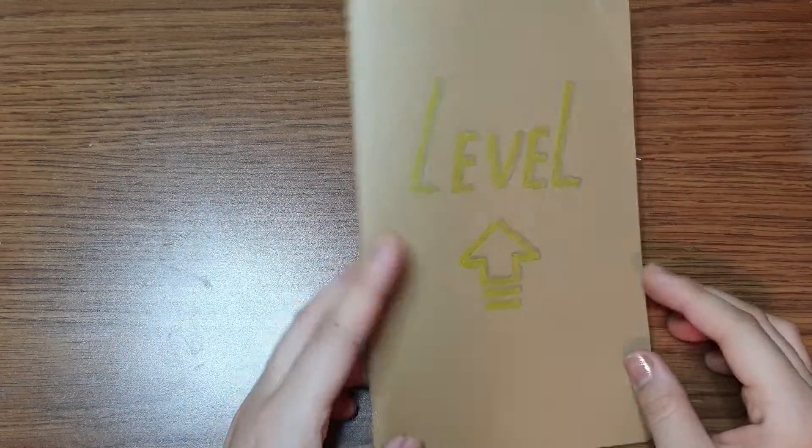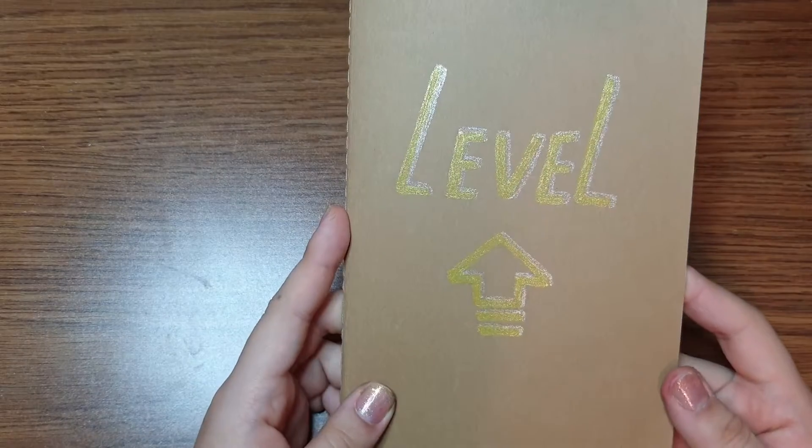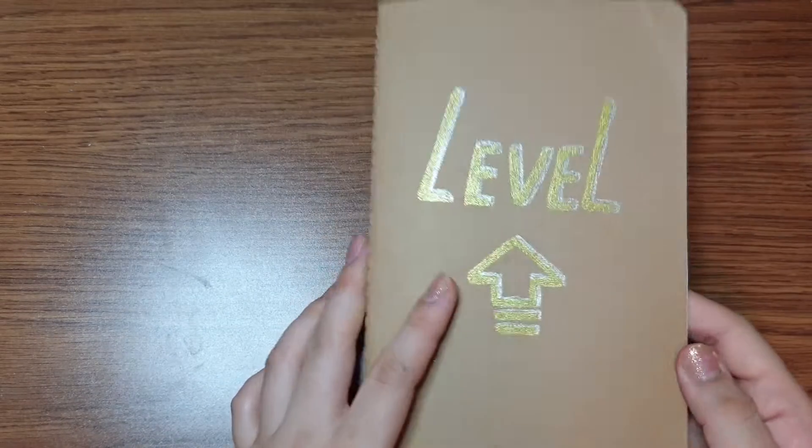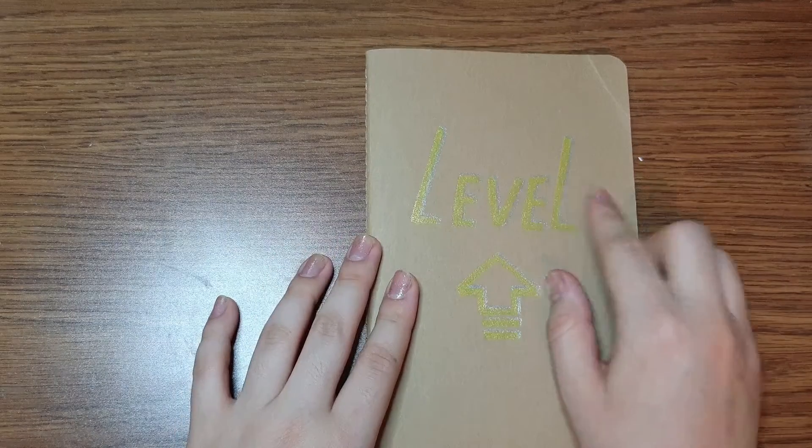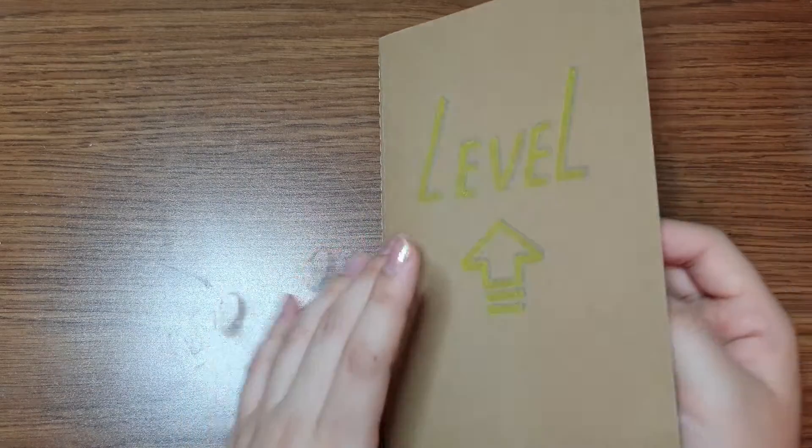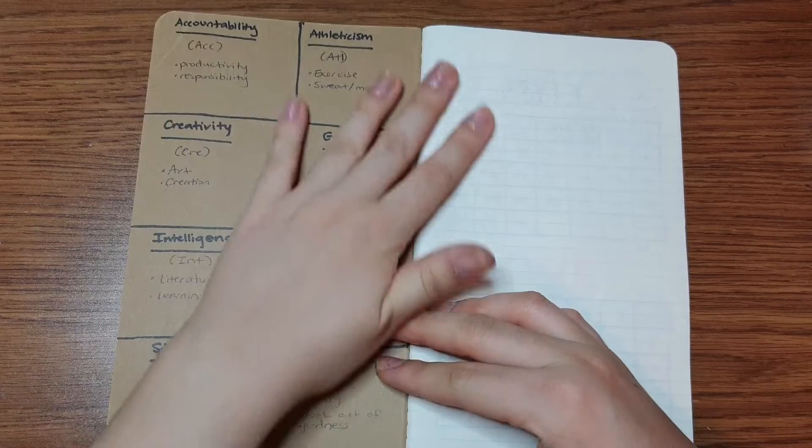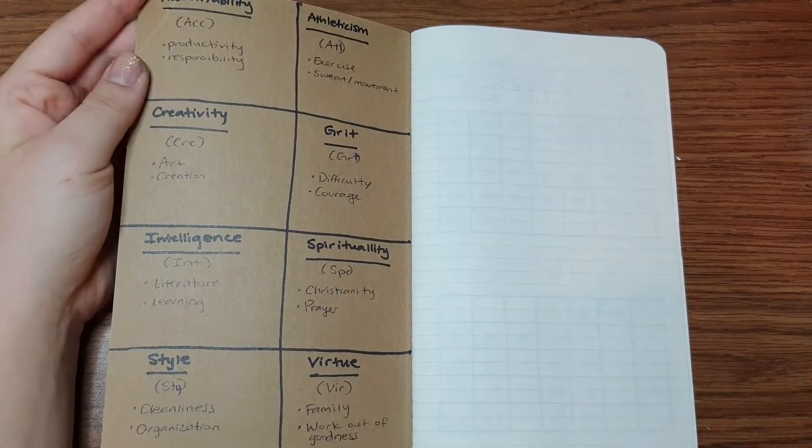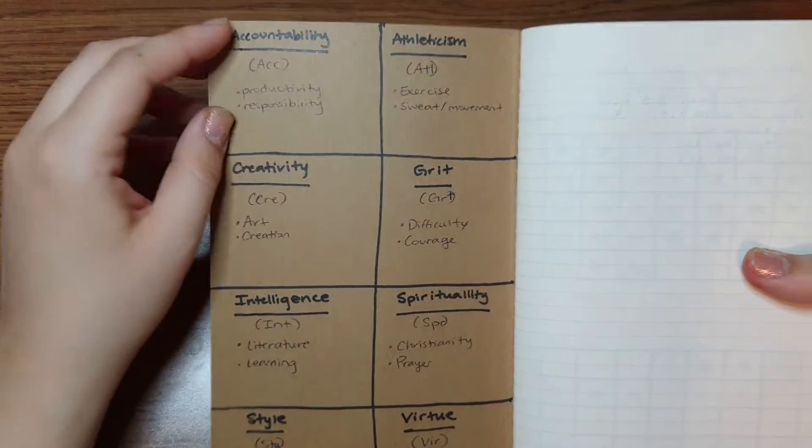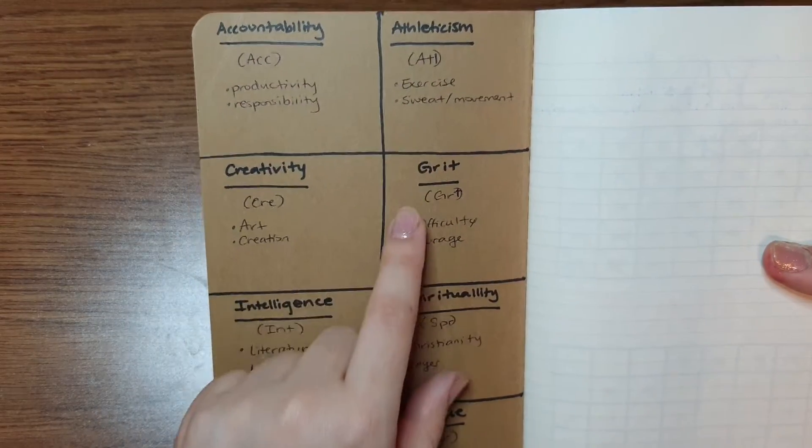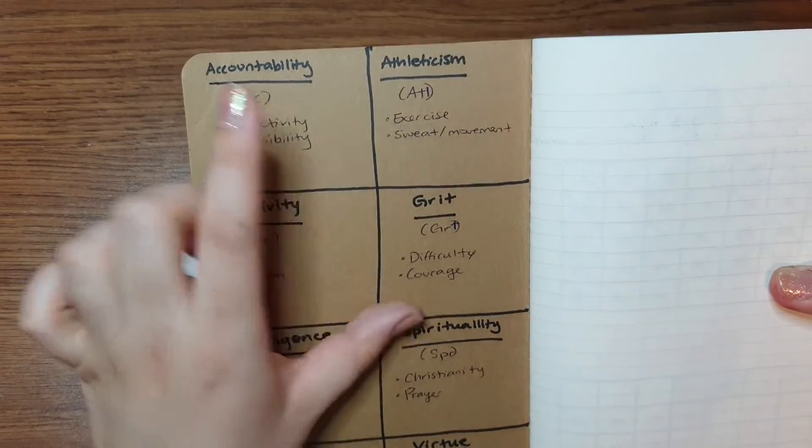Hello, this was an idea that I had earlier this year, but it didn't work out for me. It might work out for someone else though. This is my level up bullet journal. This was to keep me energetic and moving. I have all of these stats I would like to call accountability, athleticism, creativity.